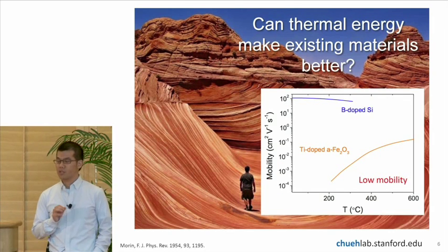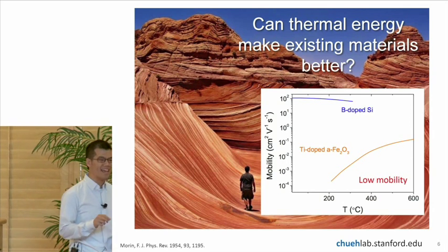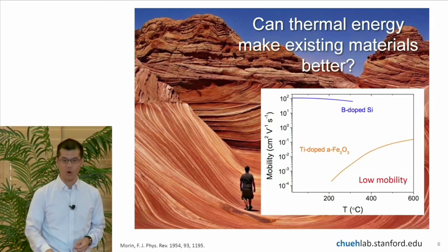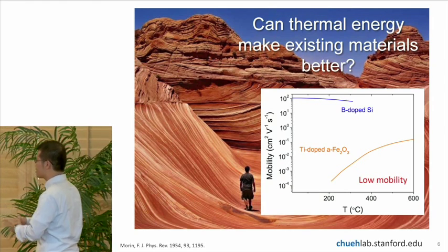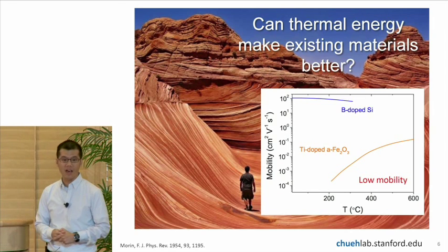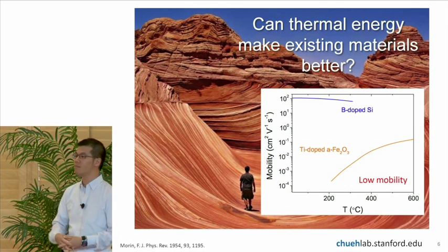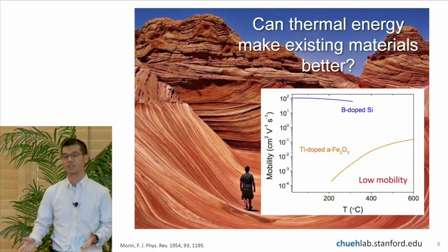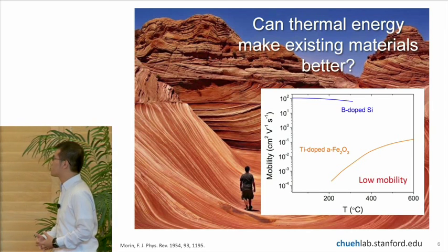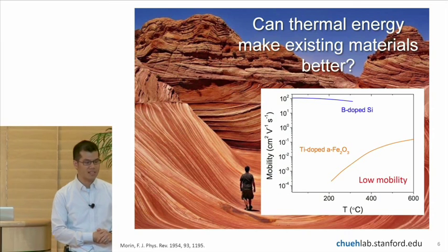One of the interesting things I'd like to talk about today is how can thermal energy make existing materials better? So I show a picture here, it's rocks that's composed of mostly iron oxide. This is a material that is of great interest to the solar fuel community because it's abundant and it is extremely stable. It is the most oxidized form of iron. So this is a material that exists in nature, sometimes it's called hematite, it's Fe2O3.